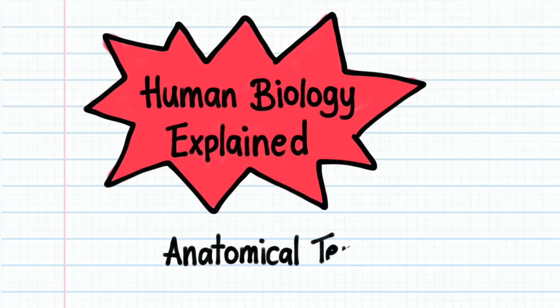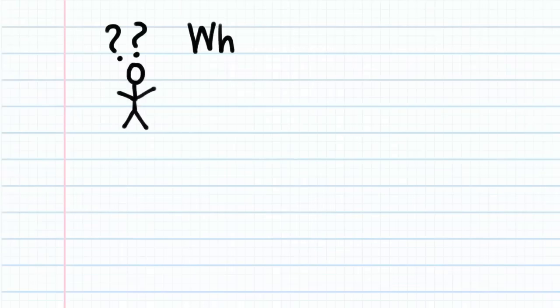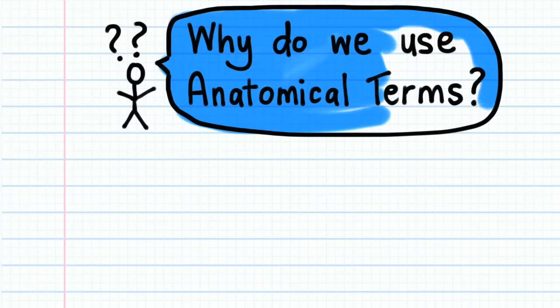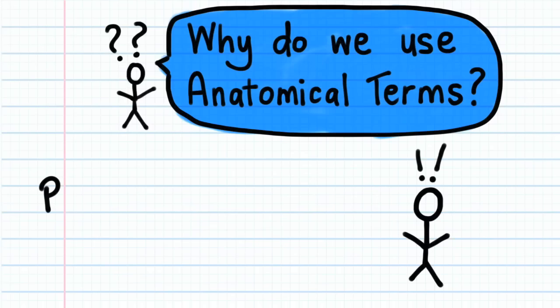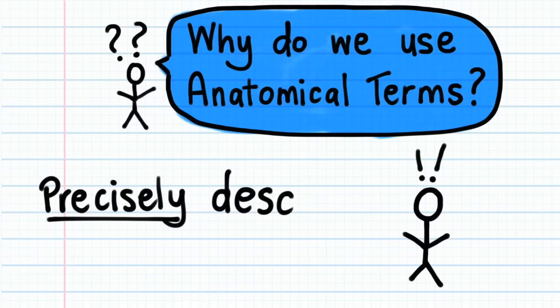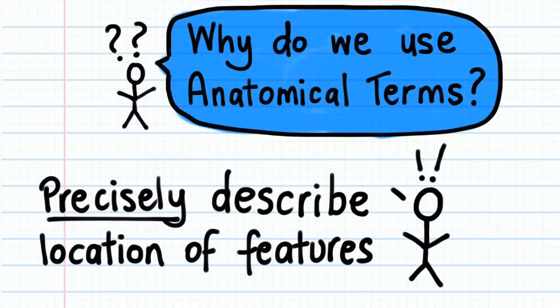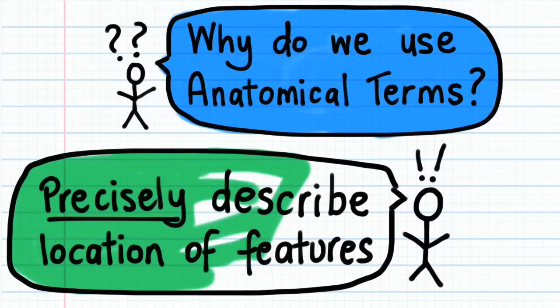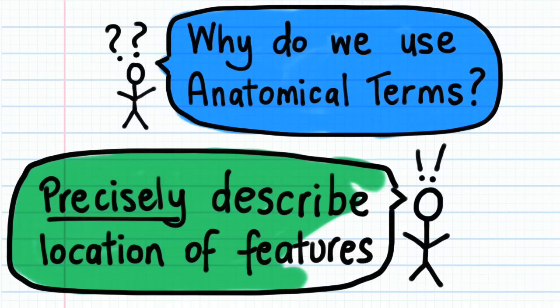Before we take a look at the meaning of specific anatomical terms, the first question we should answer is: why do we use anatomical terms? Anatomical terms exist so that we can precisely describe the location of features on a body.